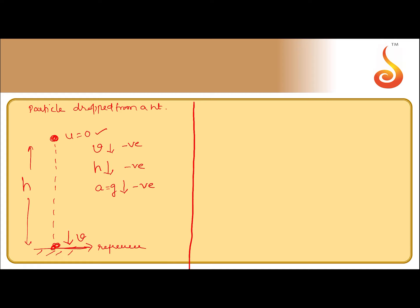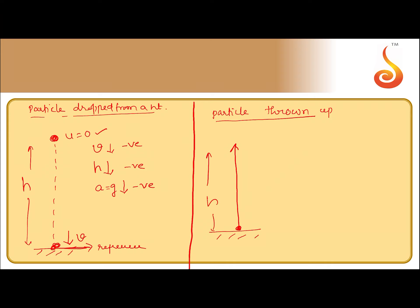Let us consider one more case. A particle is thrown up and it reaches a height h. At the highest point its velocity is 0. Now let us see the sign conventions: u is in the upward direction, therefore I take it with a positive sign. v is 0, so no question of sign. h is in the upward direction, therefore it is taken with a positive sign. Acceleration due to gravity is always in the downward direction, therefore it is taken with a negative sign.